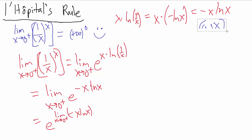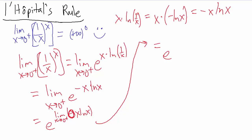Hopefully this looks familiar from the previous video. We can pull the negative sign out as a factor of −1, giving us e to the negative of the limit as x goes to 0 from the positive side of x times natural log of x. That inner limit is one we actually evaluated a couple of videos ago — in example 4.